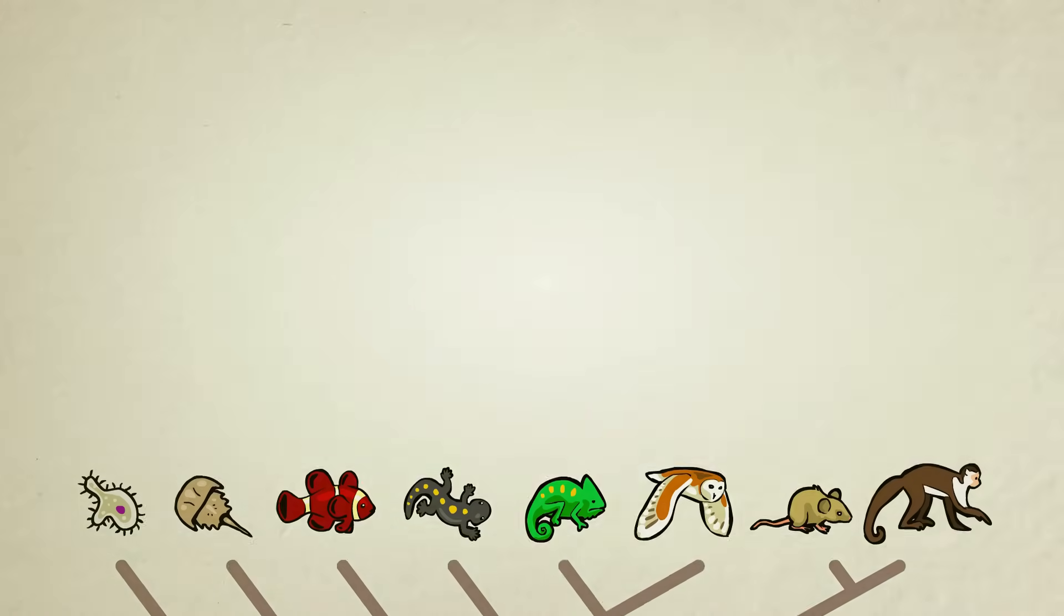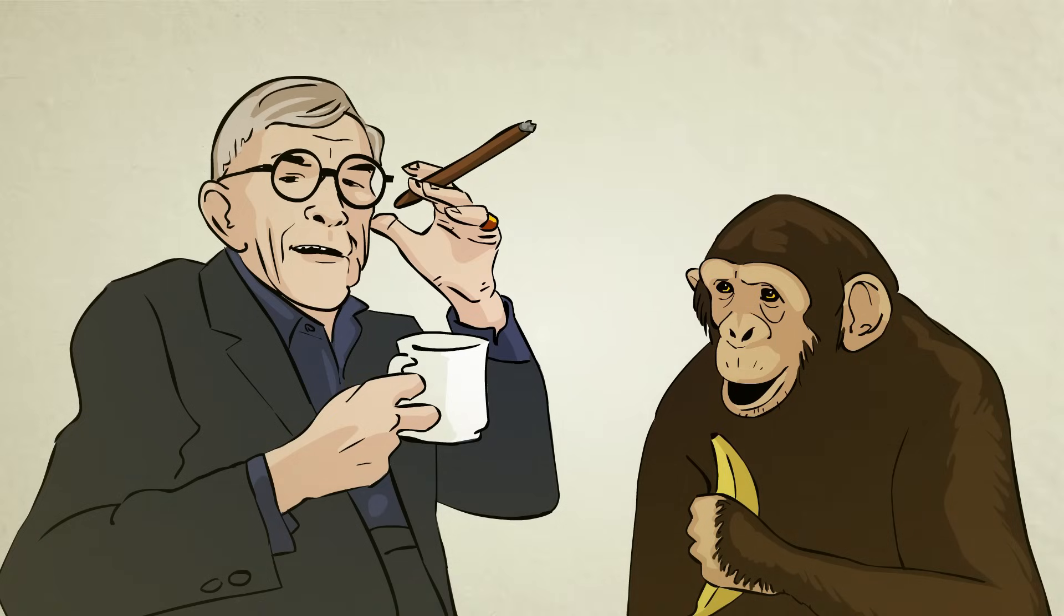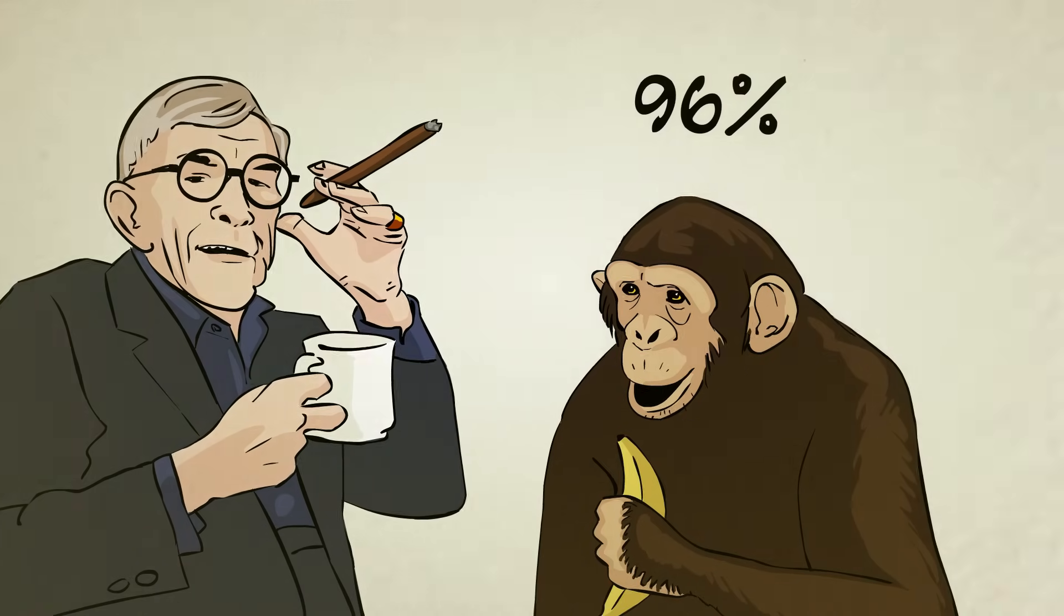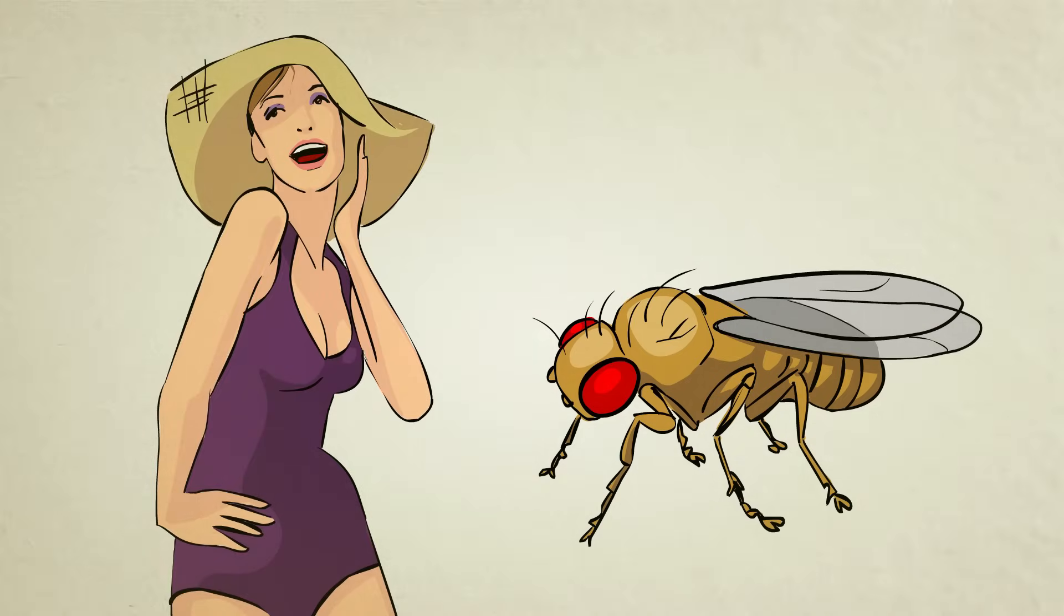You might not be too surprised to learn that humans and chimps, which are closely related, share 96% of their genetic code. But what would you think a lowly fruit fly has in common with a beautiful swimsuit model? Surprisingly, about half of its genes.